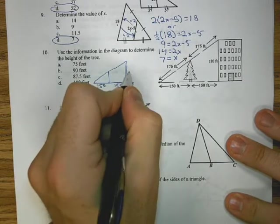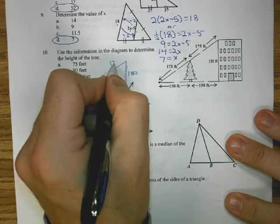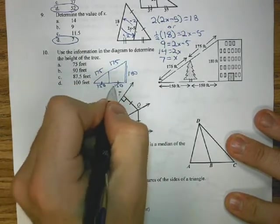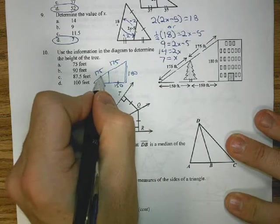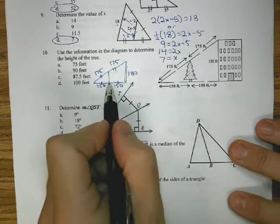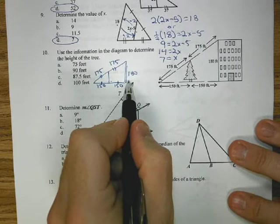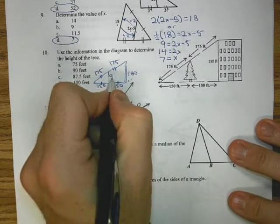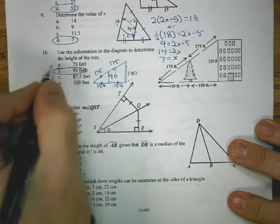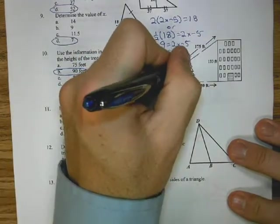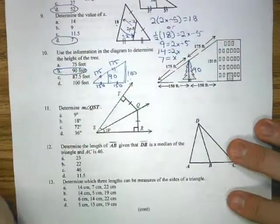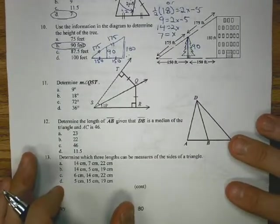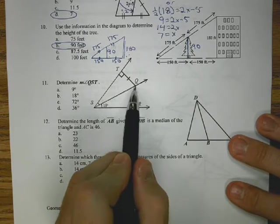For number 10, if I just redraw the information we have, I have 150, 150, 180, 175, and 175. These are the same, which means this is a mid-segment to that side. The mid-segment is half of the 180, so 90 is our answer. That's the height of the tree.